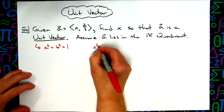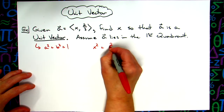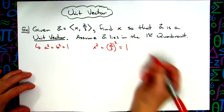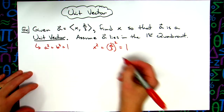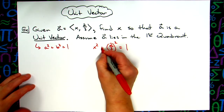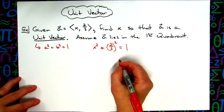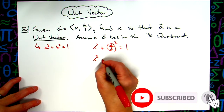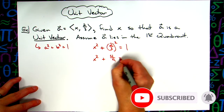So I'm going to have x squared plus two-thirds squared equal to one. This is a simple two-step equation that we can solve to find the value of x. I'll have x squared plus four-ninths equal to one.